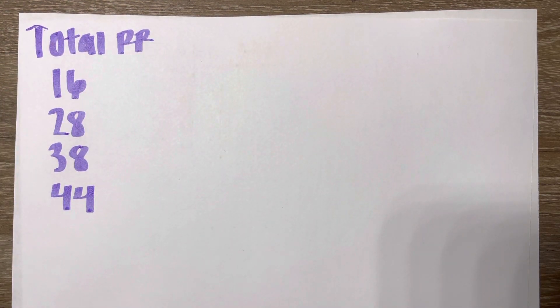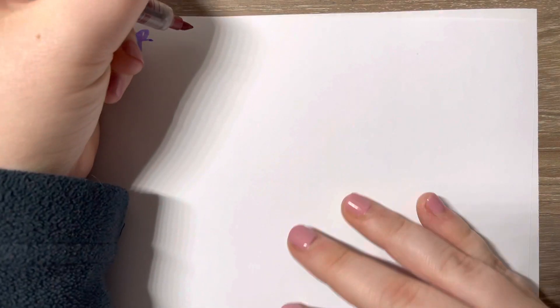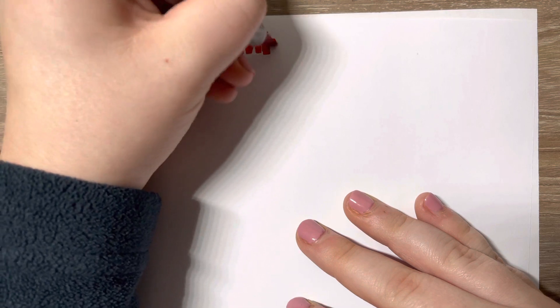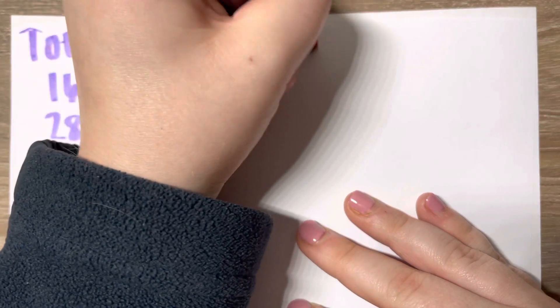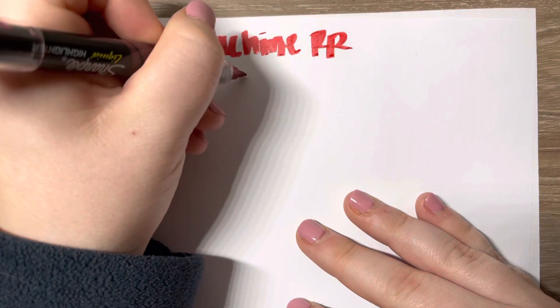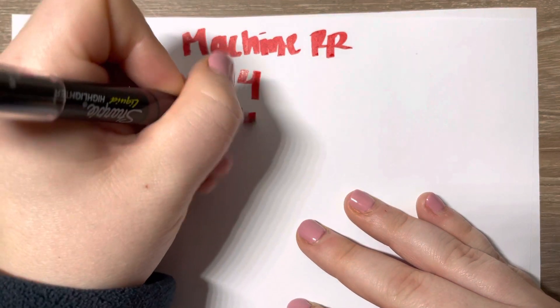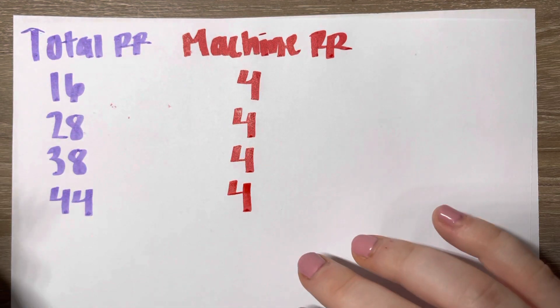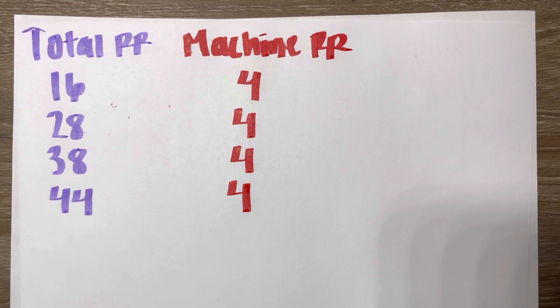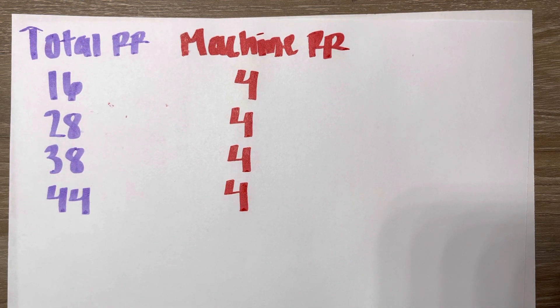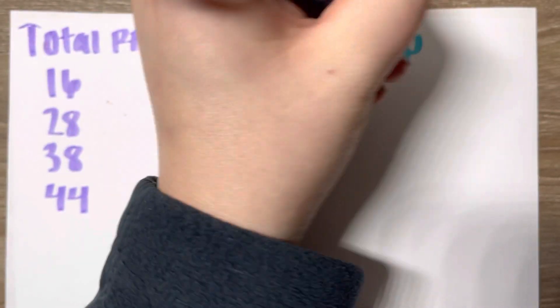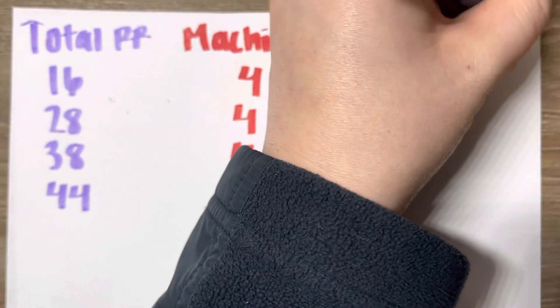We are also given our machine rate and that is four every single time. So the ventilator is just set at four breaths per minute for the mandatory rate. And we are solving for spontaneous respiratory rate.